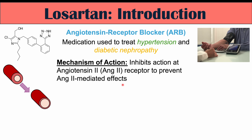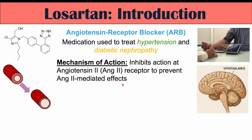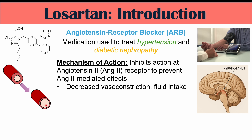Angiotensin 2 has many different effects. Some of these include vasoconstriction. So if we block angiotensin 2, we get vasodilation, or reduced vasoconstriction — blood vessels open up. This is a way to reduce pressure.